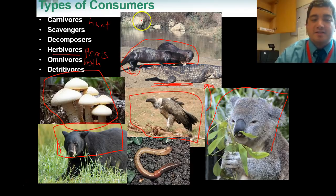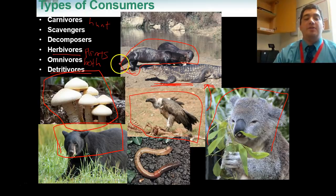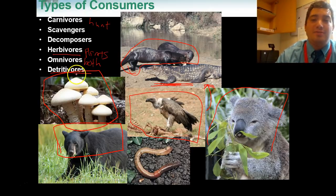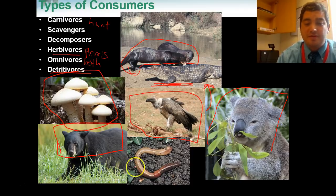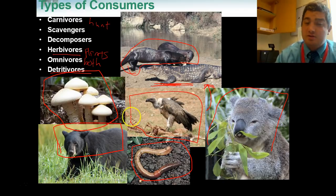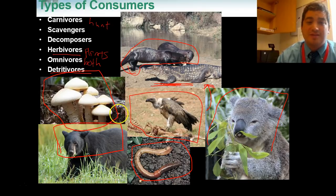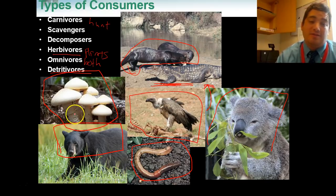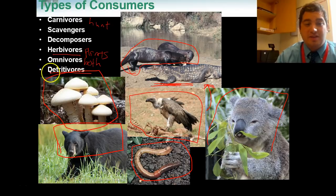The last type of consumer we're going to talk about is a detritivore. A detritivore is kind of similar to a decomposer — they eat things that are dying or dead and break them down. A perfect example is an earthworm. An earthworm travels through the ground, chews on dirt, breaks it down into smaller pieces, and absorbs any nutrients or energy materials floating around in the dirt. Detritivores break things down into smaller pieces and absorb them — think about earthworms when you think about those.